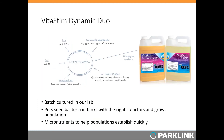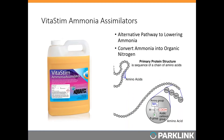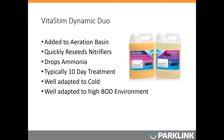The Vitastim Dynamic Dual is used to reseed bacteria when they are going to thrive well but the population is just too low for some reason. It is a two-part product: Part 1 contains autotrophic nitrifiers that follow the nitrification pathway — oxidizing ammonia to nitrite and then to nitrate. Part 2 consists of heterotrophic ammonia assimilators — bacteria that take up nitrogen and incorporate it directly into their cellular structure, providing another way to lower ammonia. This also works well at very low DO, covering two approaches to bringing ammonia down.